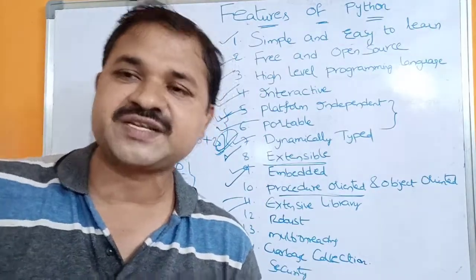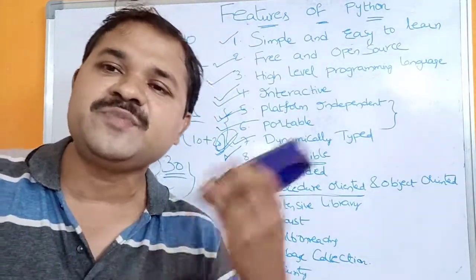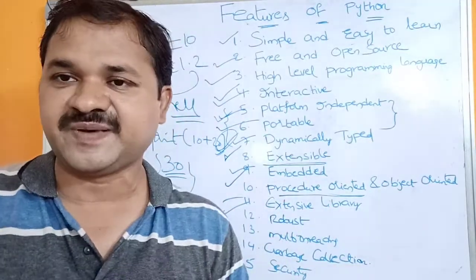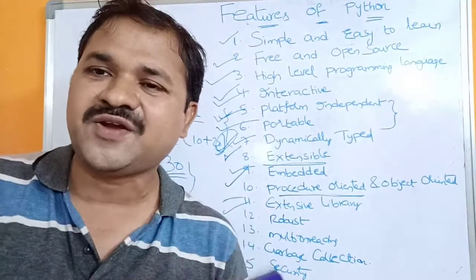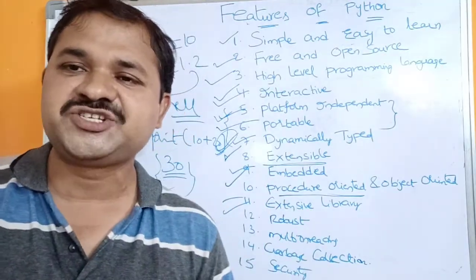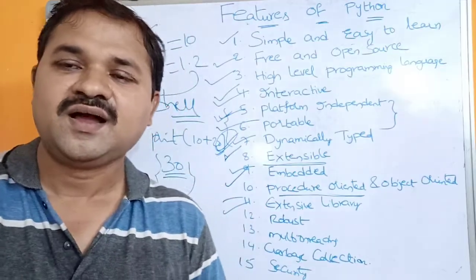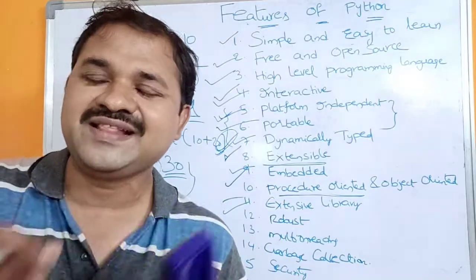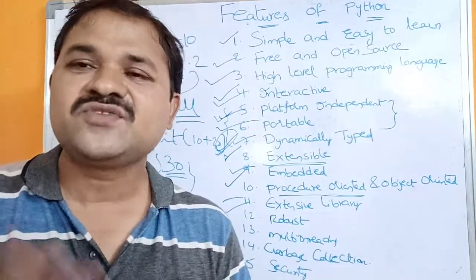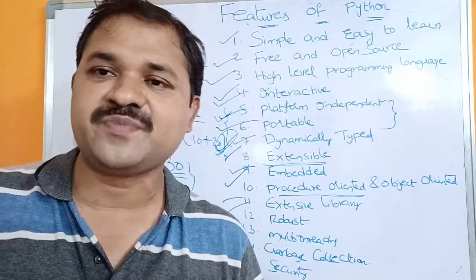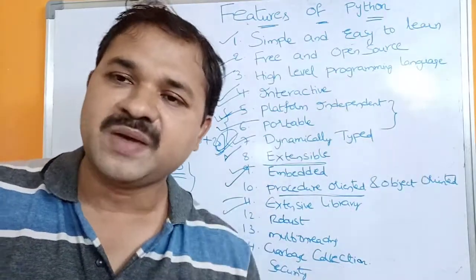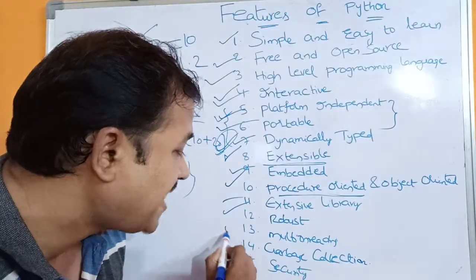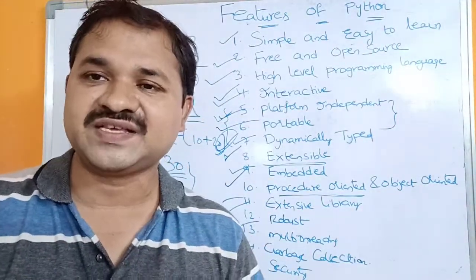The next feature is that Python is a robust programming language. Robust means strong. A language is considered robust if it is excellent in memory management and exception handling. Python is excellent in memory management through features like the new operator, delete operator, and garbage collection, and it is also excellent in exception handling.